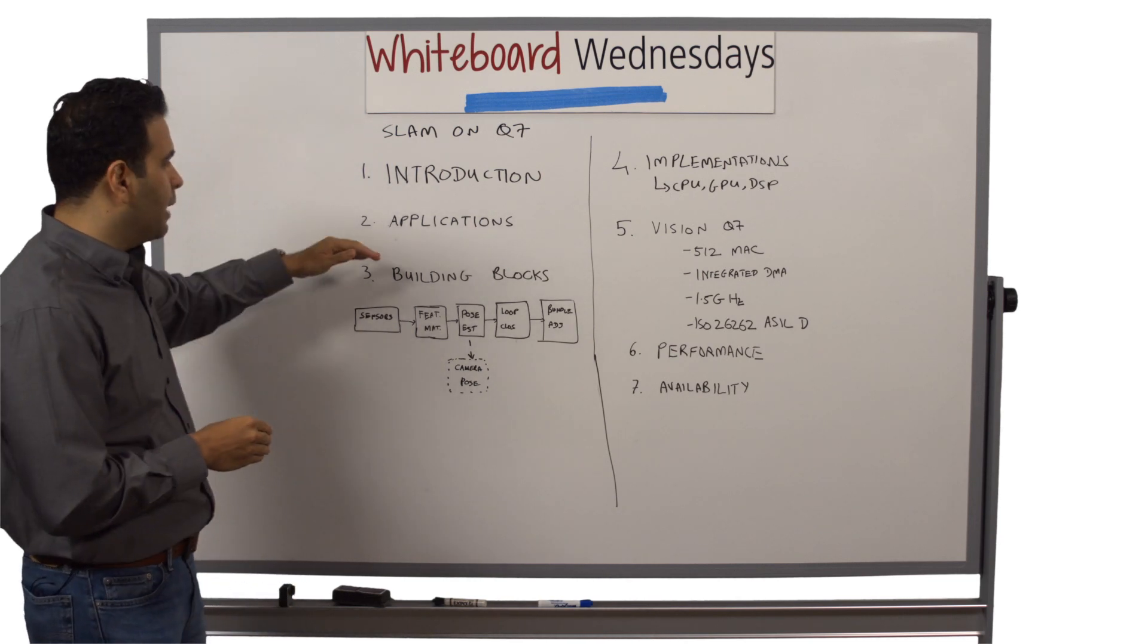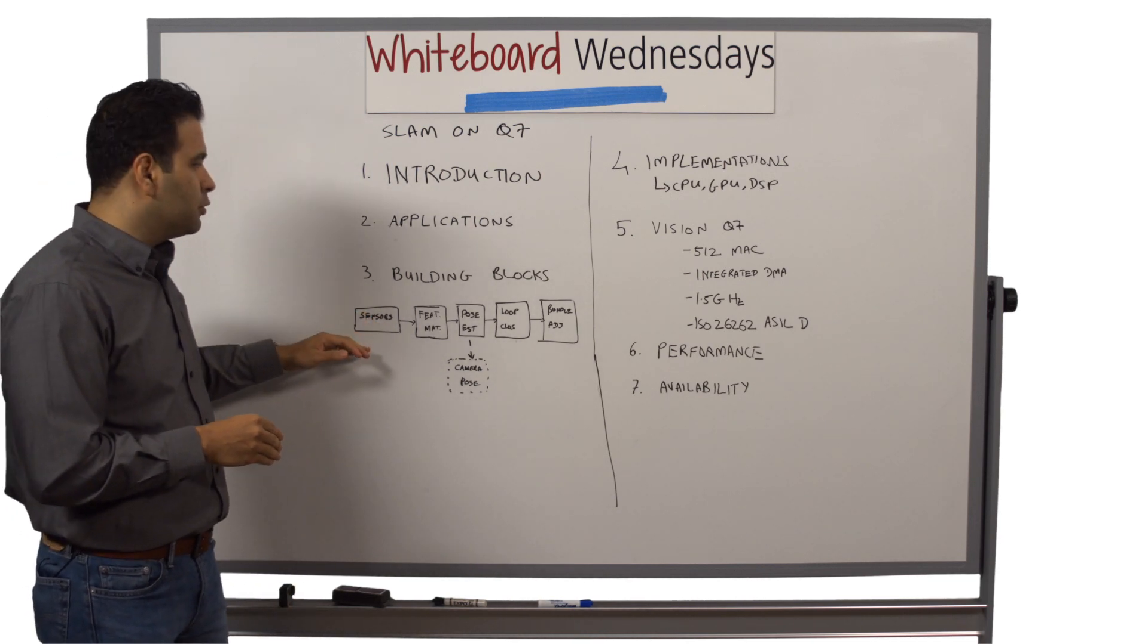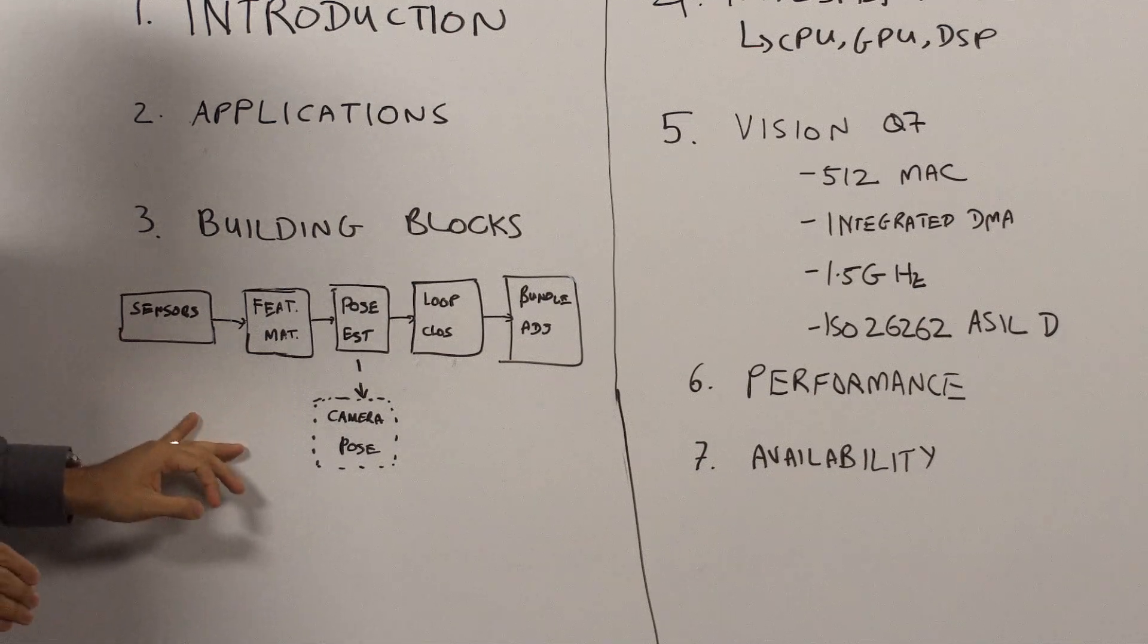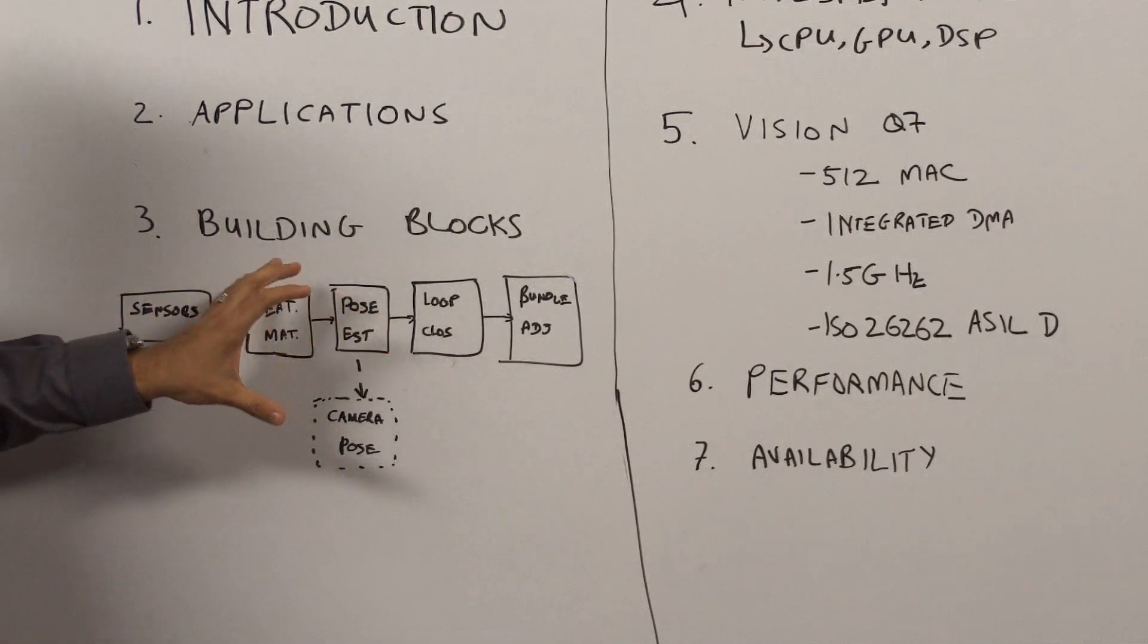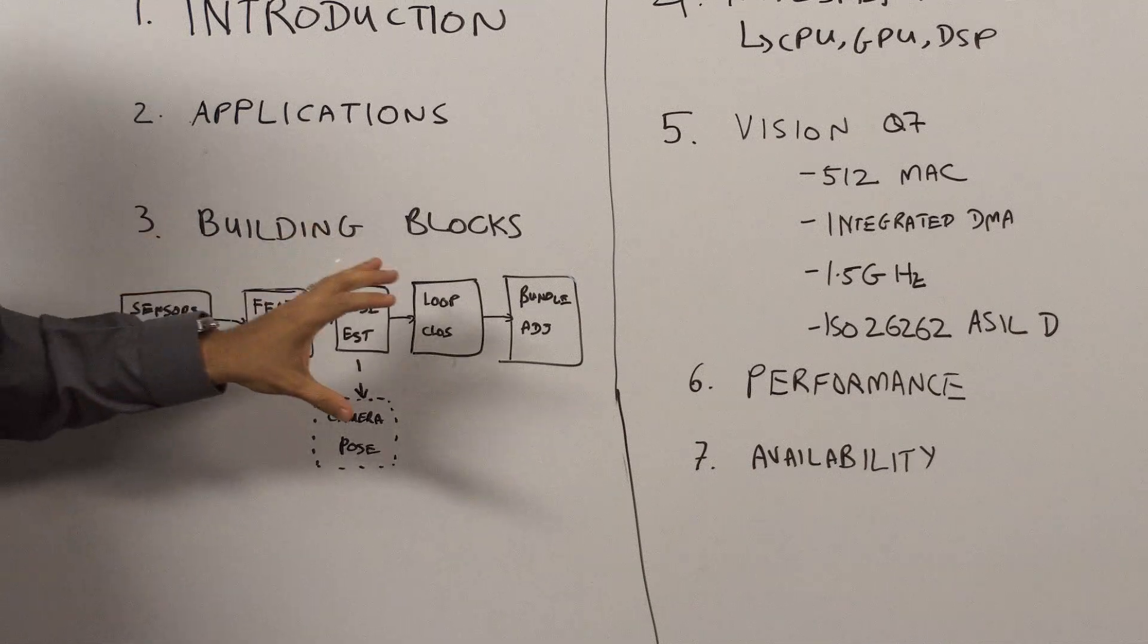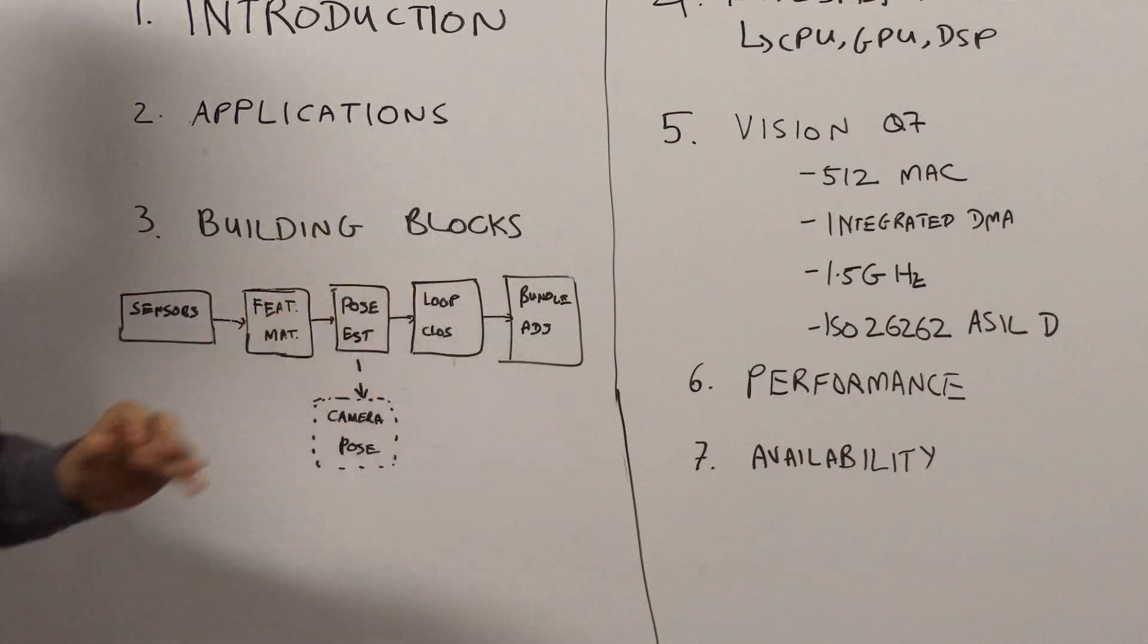Now that I've talked to you about the applications, let's briefly go through the building blocks that are required to make SLAM come about. Here's a generalized flow. There are many different variations, but I'm showing a common flow that covers the main points of SLAM.